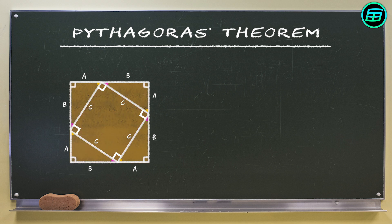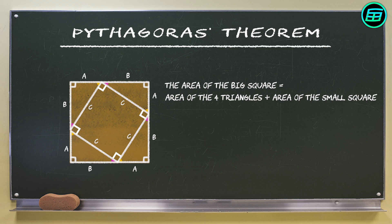The area of the large square is four times the area of each of the right triangles plus the area of the smaller square. Since the small square has side C, the area of the big square is the area of the four triangles plus the square of C.